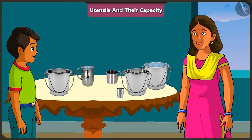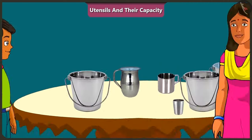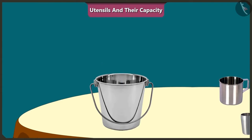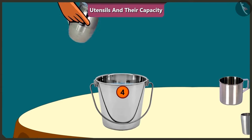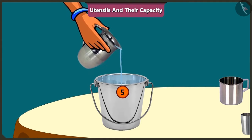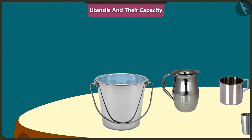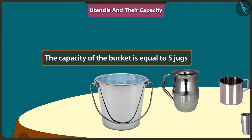Come on, let's try filling this bucket with this jug. 1, 2, 3, 4, 5. The whole bucket got filled with just 5 jugs of water. This means the capacity of this bucket is equal to 5 jugs of water.